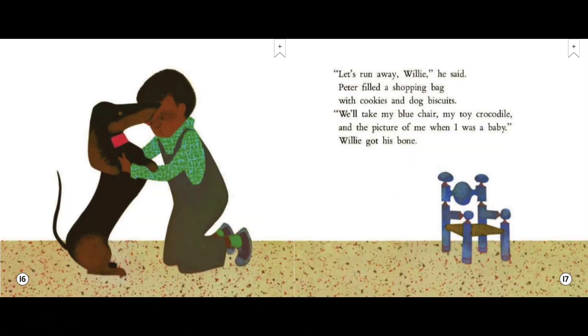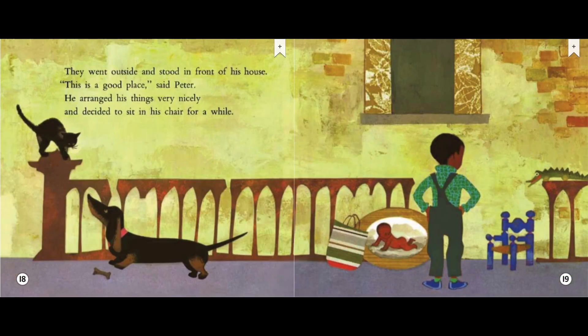Let's run away, Willie, he said. Peter filled a shopping bag with cookies and dog biscuits. We'll take my blue chair, my toy crocodile, and the picture of me when I was a baby. Willie got his bone. They went outside and stood in front of his house. This is a good place, said Peter. He arranged his things very nicely, and he decided to sit in his chair for a while.